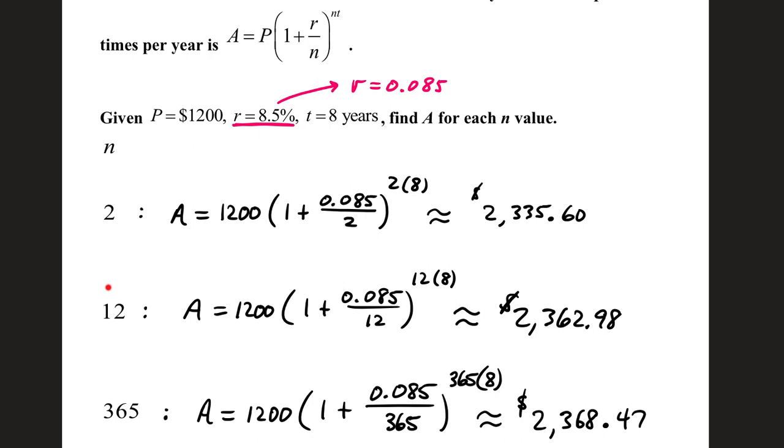When N is 12, the money is compounded monthly, or 12 times per year. The only thing you change about your formula is you change the 2's to 12's.